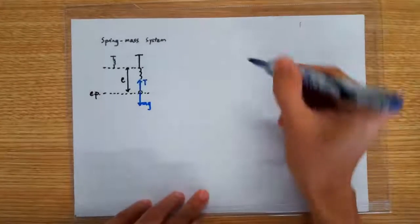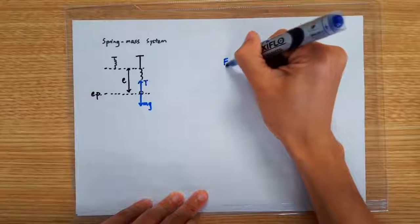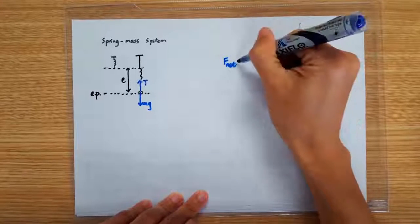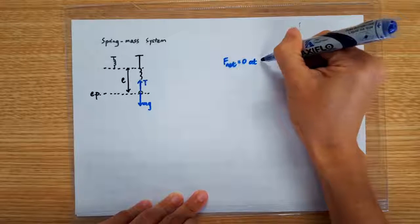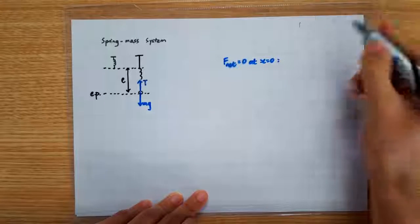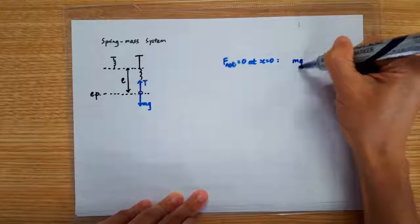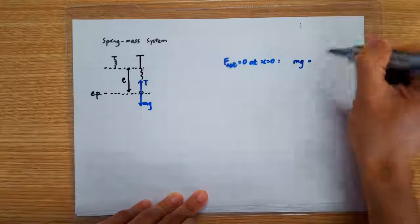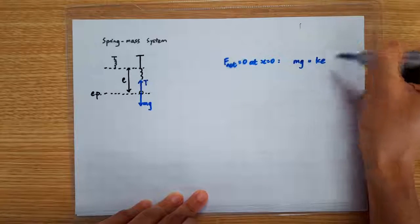Since it comes to equilibrium, this must mean that the downward weight of the mass must be exactly balanced by the upward tension in the spring. So we can write that since the net force is zero at the equilibrium position, mg is exactly equal to the tension, which I can write as k times E.